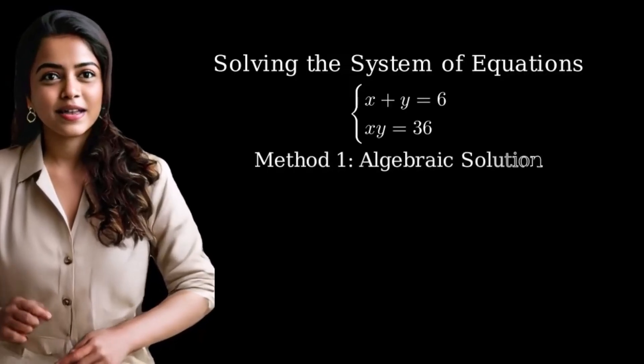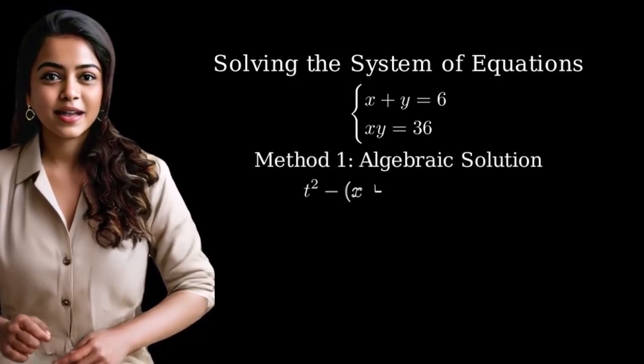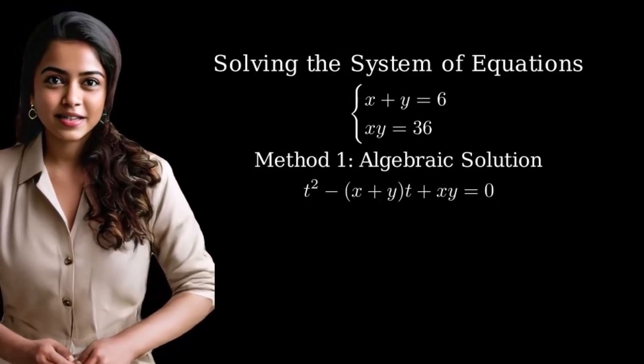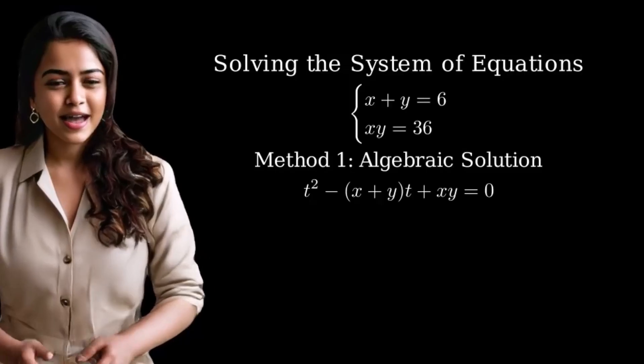Let's start with method 1, the algebraic solution. First, we let x and y be roots of the quadratic equation t squared minus (x plus y)t plus xy equals zero.